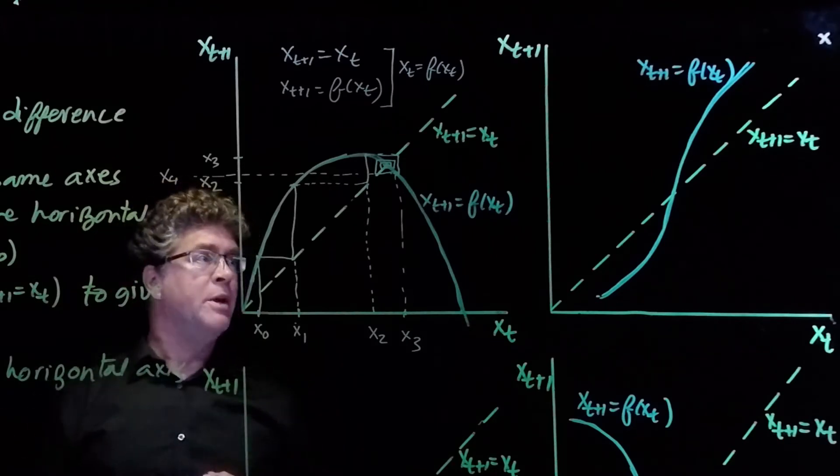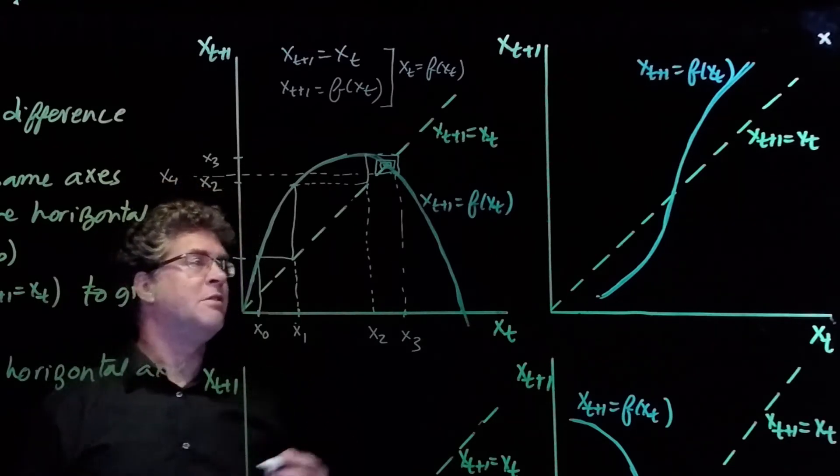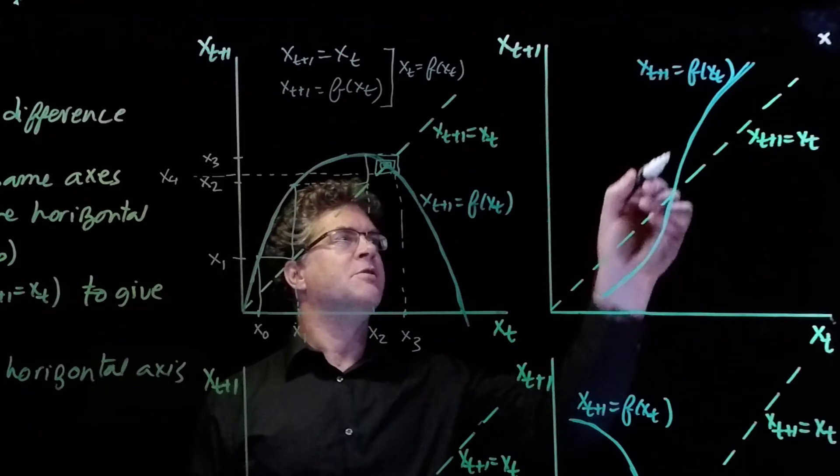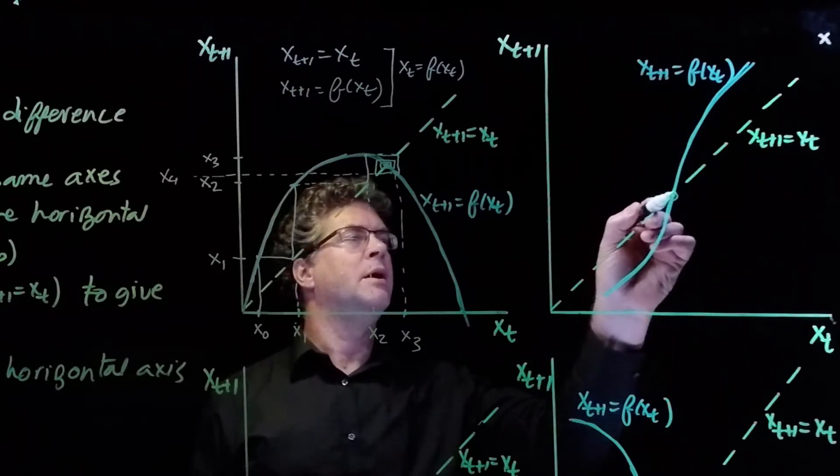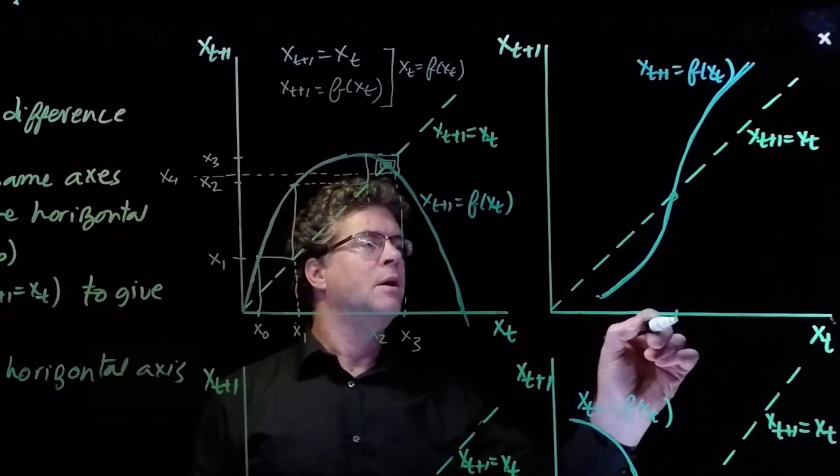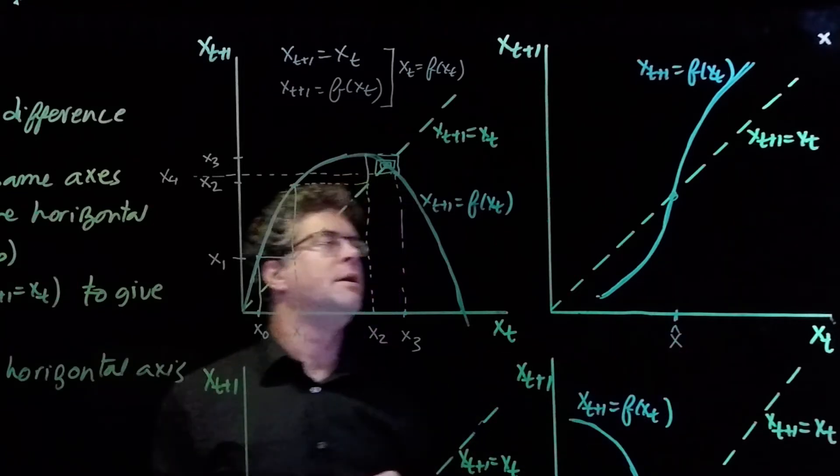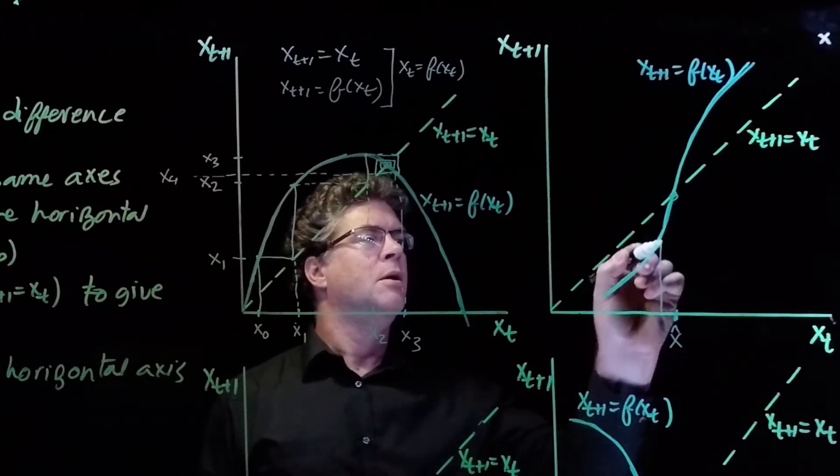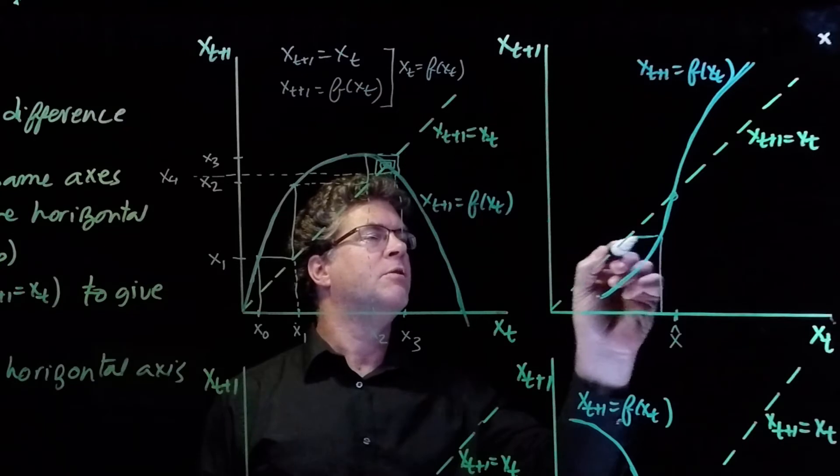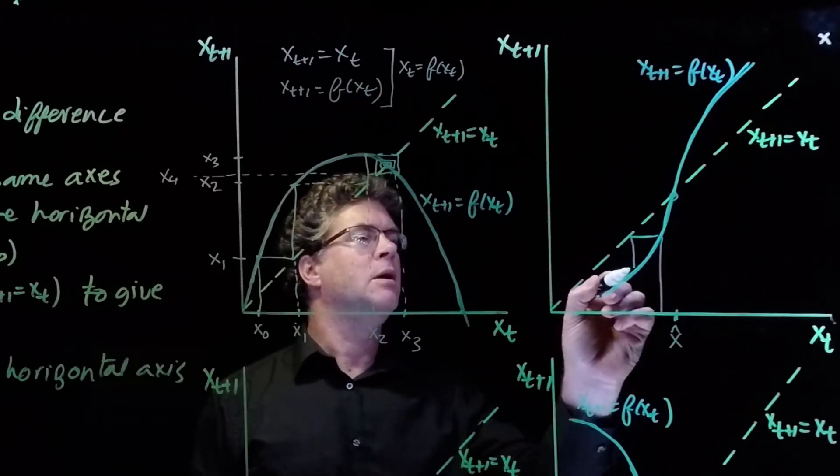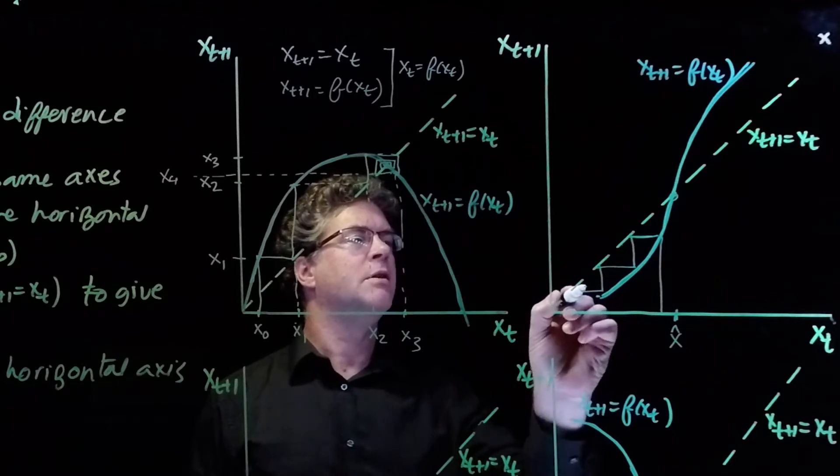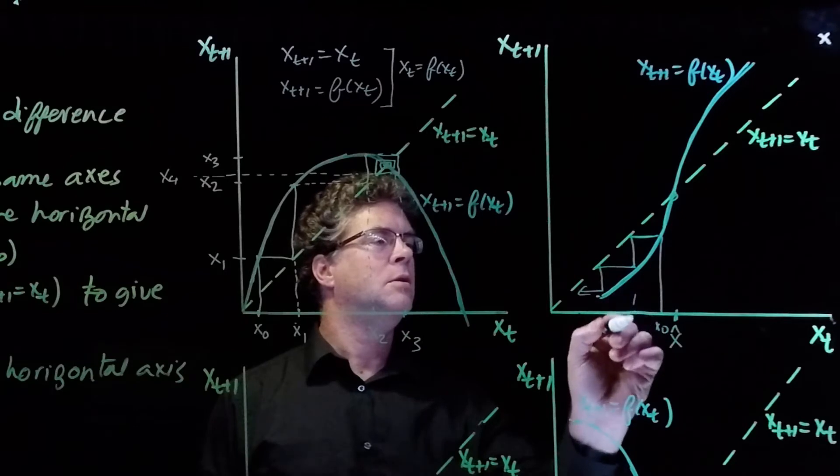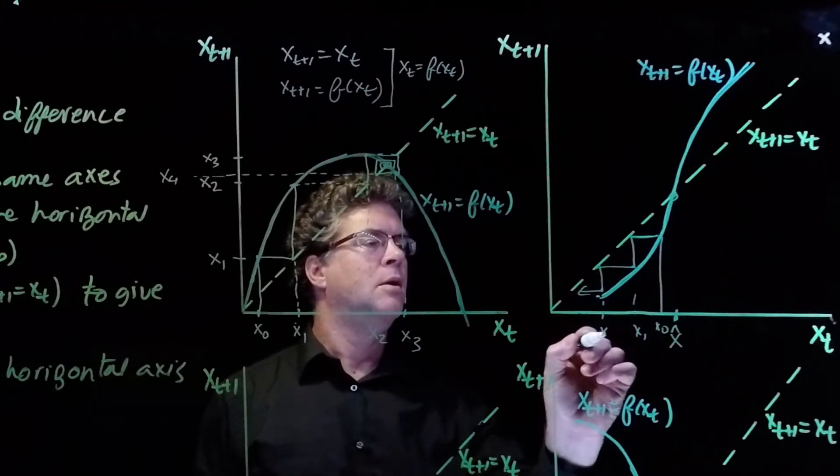So let's try cobwebbing these other functions. You notice this function looks a little different. It starts off below the 45 degree line, and then it goes above. And so we know right away this is going to be our equilibrium point, and we'll call that x hat. If we start to the left of the equilibrium point, we go to f, and then we reflect off the 45 degree line, and then we go back, and we continue like this. So we have x_0, x_1, x_2.